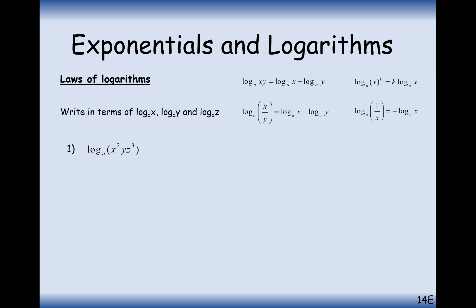Let's look at doing this algebraically - expanding logs using these laws. For log base A of x squared times y times z cubed, we first split the multiplication using the addition law into separate logs. Then we bring the powers 2 and 3 to the front as multipliers, since they were indices inside the logs. So the final expanded form is written out longhand.